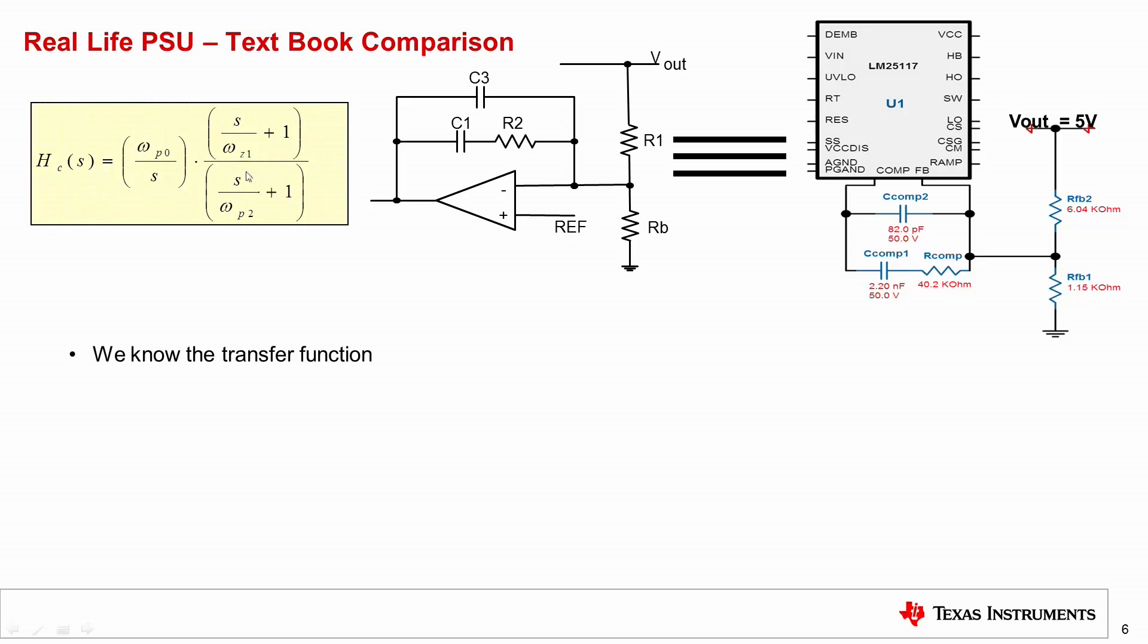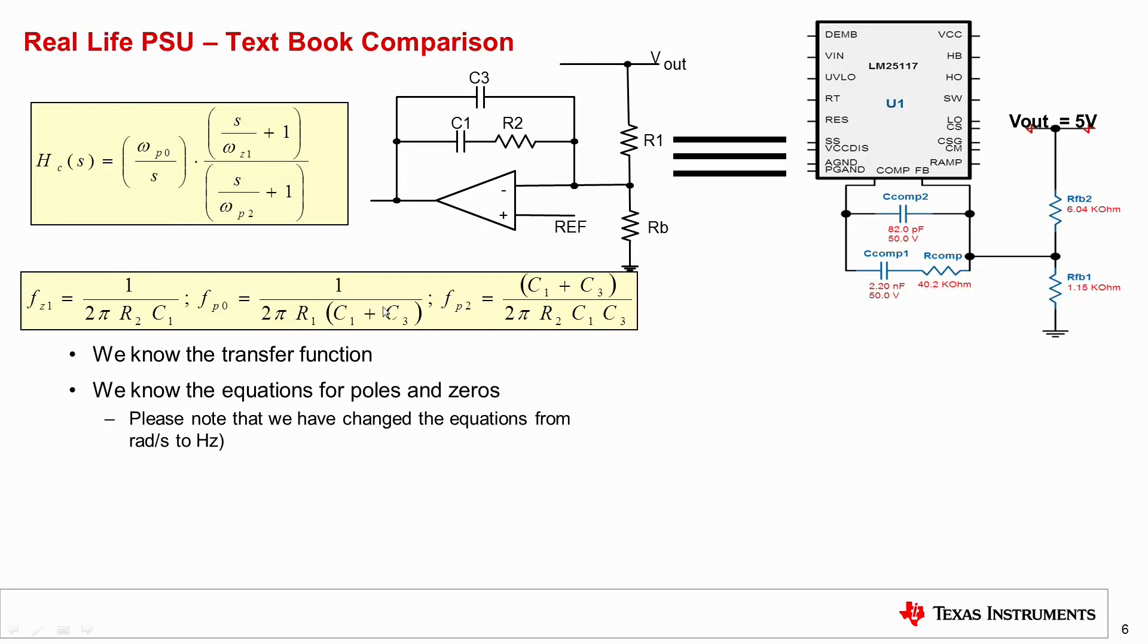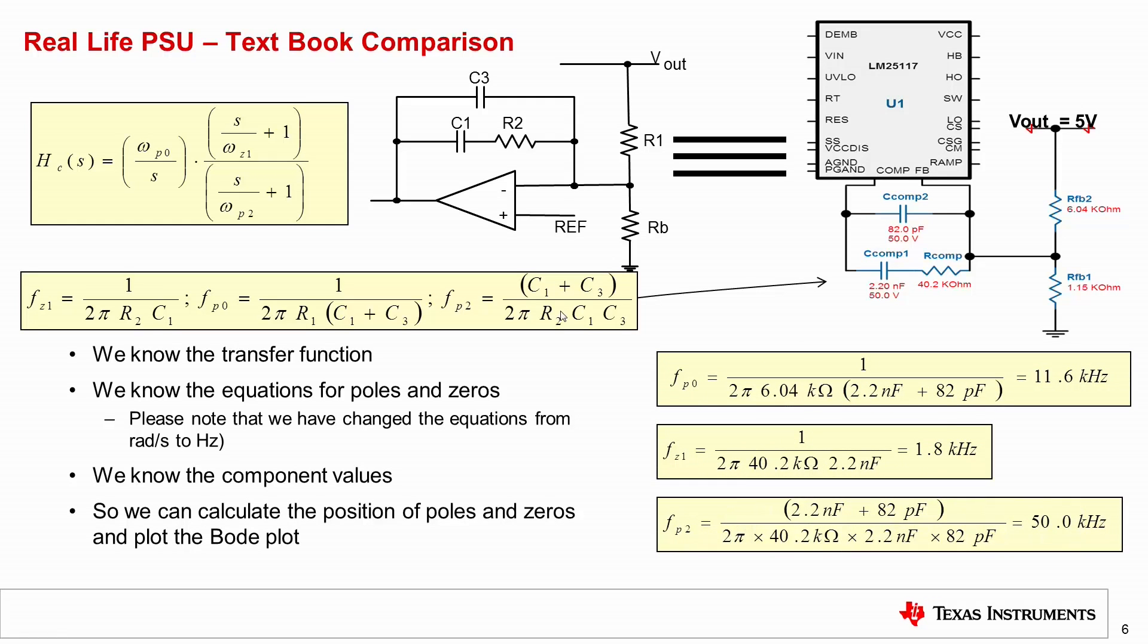We know the transfer function. We know the equations for poles and zeros. I have now converted them to hertz from radians. And we know the component values because WebBench have designed them for me. So given that I know the component values and I know the poles and zero equations, I can actually calculate the positions of my poles and zeros. I've got a pole at origin at 11.6 kilohertz. I have got a zero at 1.8 kilohertz. And I have got a second pole at 50 kilohertz. And these are based on the components that were calculated by WebBench.